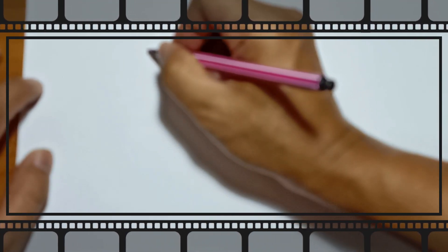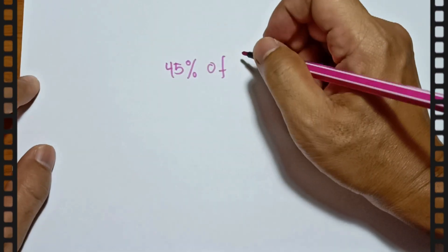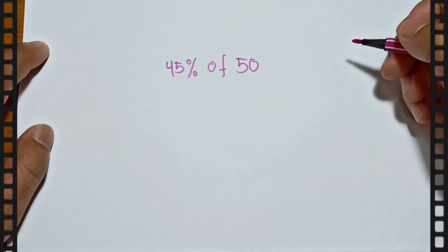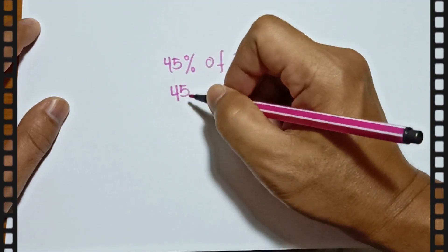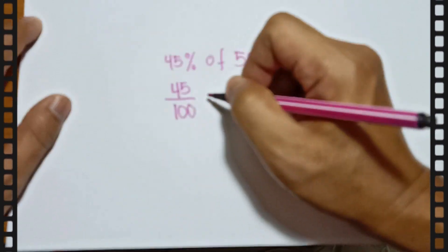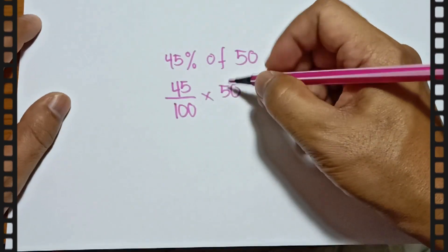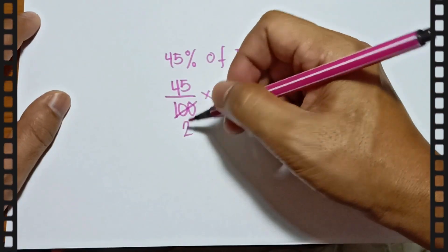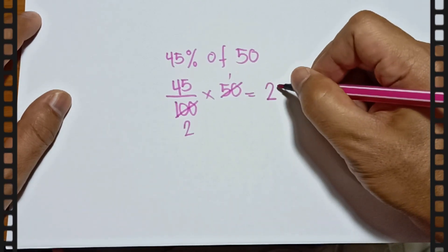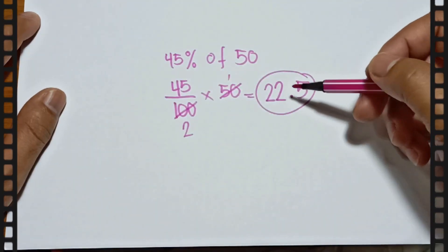What if you are looking for 45 percent of 50? All you have to do is 45 over 100 times 50. As you can see, 50 and 100 are divisible by 50, so this becomes 1 and 2. Then 45 divided by 2 is 22.5, and that is 45 percent of 50.